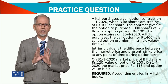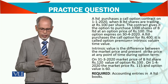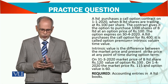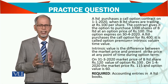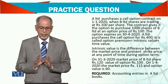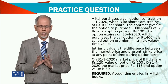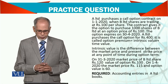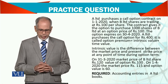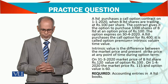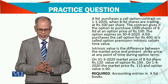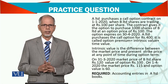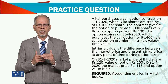You have paid Rs. 400 and you have got a right to purchase 1000 shares. You will buy at Rs. 100 per share by 30th April 2020. The intrinsic value is the difference between the market price and the striking price at any point of time during the option term. So you have to pay for 4 months.